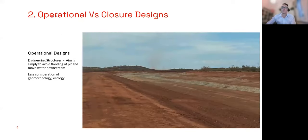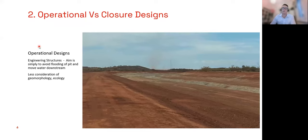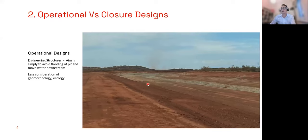Operational designs are relatively straightforward — you determine the hydrology, run some simple hydraulic models, determine what cross-section you need, and go construct the drain. You don't need to consider geomorphology or ecology. In this example, we've essentially got a trapezoidal channel with a low flow channel at the bottom — not a lot of effort has gone into creating a system that will evolve to a natural creek. It's only a temporary diversion so it didn't warrant that effort.